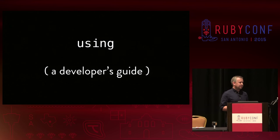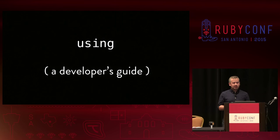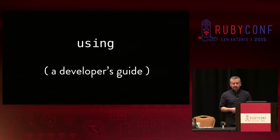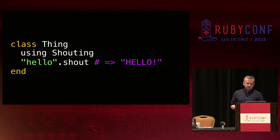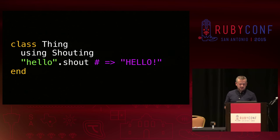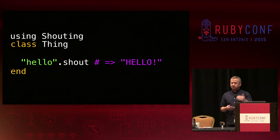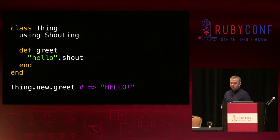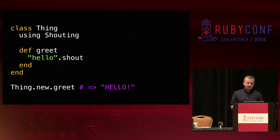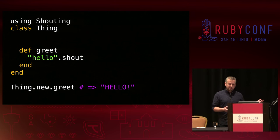We know that we can call the refine method within a module to create refinements, and that is relatively straightforward. But it turns out that when and where you call the using method can have a profound effect on how the refinement behaves with our code. We've seen that invoking using inside a class definition works — we activate the refinements and can call refined methods on string instances. But we can also move the call to using somewhere outside the class and still use the refined method as before. We can also use them within methods defined in the class, and this works even if the call to using is outside of the class.